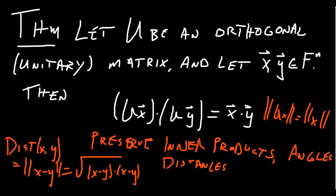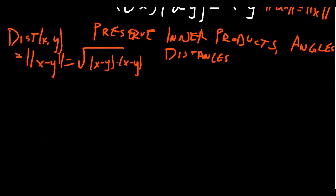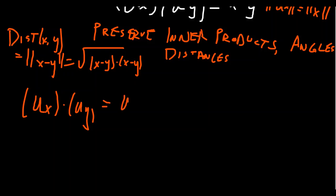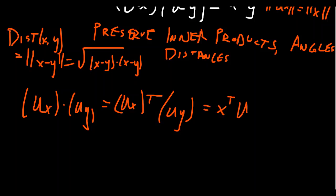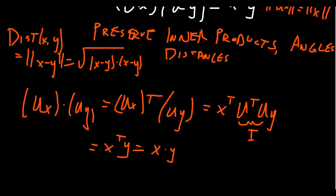The proof is straightforward. Start with the left-hand side: Ux dot Uy. For real matrices, this equals (Ux)^T (Uy) = x^T U^T U y. Since U is orthogonal, U^T U = I, so this becomes x^T y, which is the inner product x dot y. For complex matrices, replace transpose with conjugate transpose throughout, and the same argument holds.